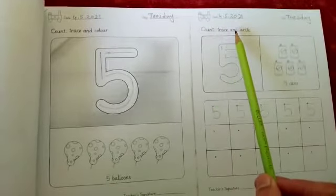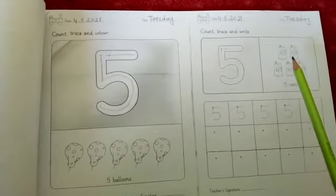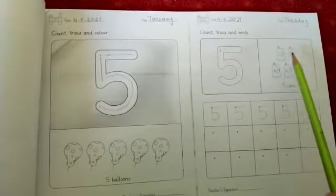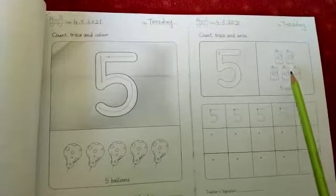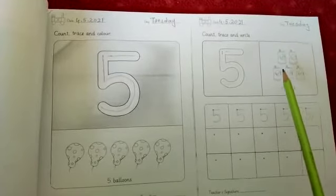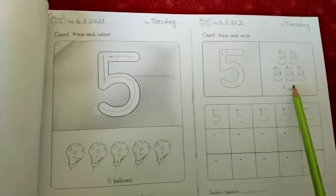Count, trace and write. First count, how many cans are here? 1, 2, 3, 4, 5. How many cans are here? 5 cans.